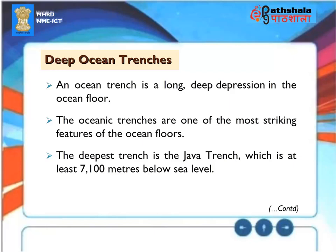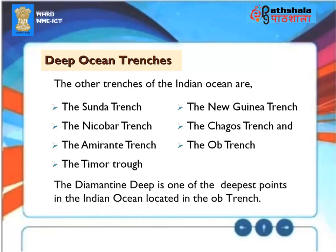Deep Ocean Trenches. An ocean trench is a long, deep depression in the ocean floor. The oceanic trenches are one of the most striking features of the ocean floors. The deepest trench is the Java Trench, which is at least 7,100 meters below sea level. The other trenches of the Indian Ocean are the Sunda Trench, the Nicobar Trench, the Amirante Trench, the Timur Trough, the New Guinea Trench, Chagos Trench, and the Ob Trench. The Diamantine Deep is one of the deepest points in the Indian Ocean, located in the Ob Trench.